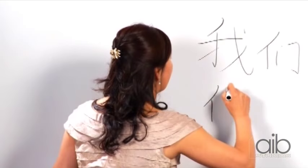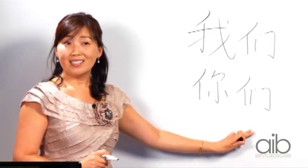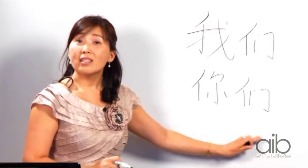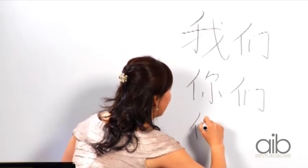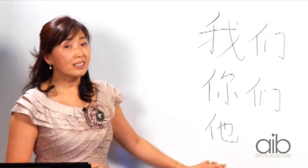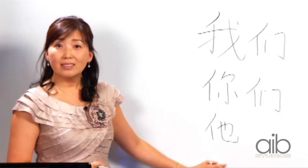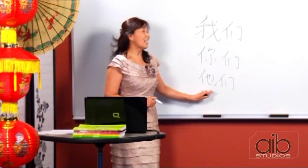Now we learn another word: 他 means he. To say they, we add 们: 他们. For example: 他们好吗? In Chinese there is also 她 — the pronunciation is the same, but 他 represents a male and 她 represents a female. The plural 她们 sounds exactly the same as 他们.